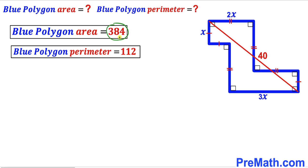So the area of this blue polygon is 384 square units and the perimeter is 112 units — that's our final answer. Thanks for watching, and please don't forget to subscribe to my channel for more exciting videos. Bye!